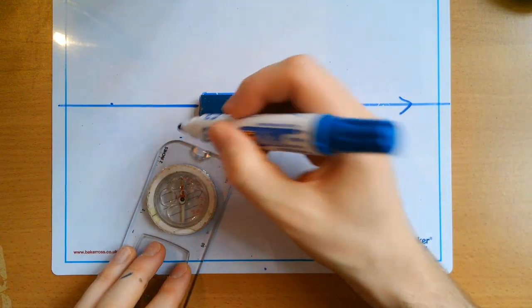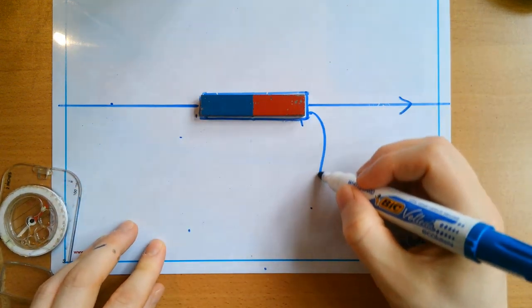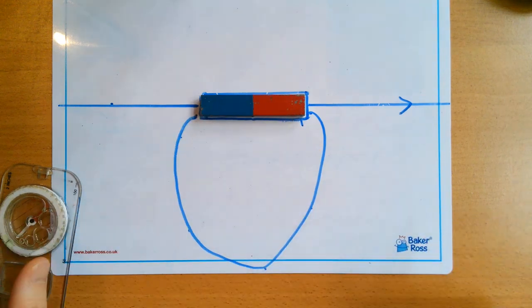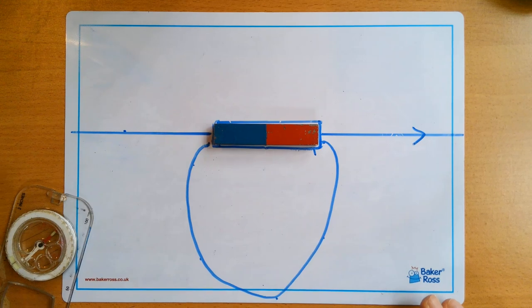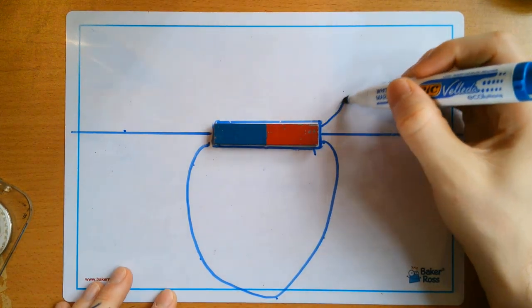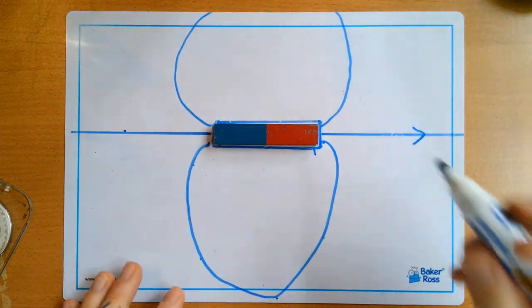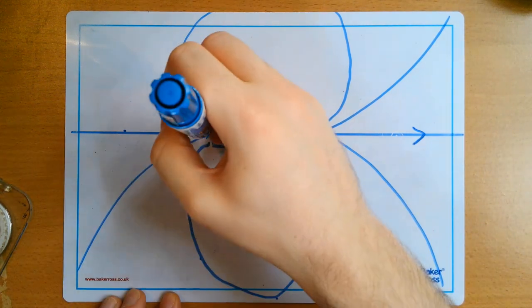Obviously the resolution on this isn't very good because of the size of the compass compared to our paper, but we can see the shape of the field there. Now if I did this at multiple points around it, what I would do is build up a symmetrical field pattern like this.